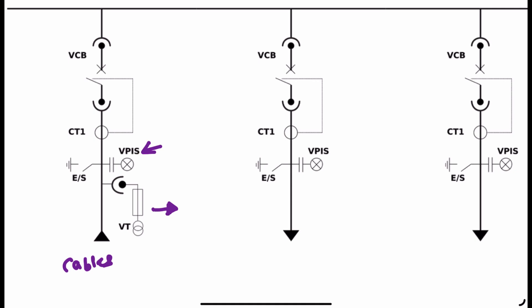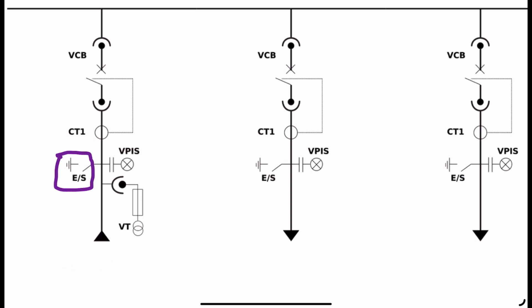Indicator lights will glow if there is supply present. Parallel to that, an earth switch is also provided — this is a safety feature. The earth switch helps us ground any trapped charges on the cables. So any trapped charges are grounded through this earth switch, providing additional safety. That is the earth switch used alongside the Voltage Presence Indication System.